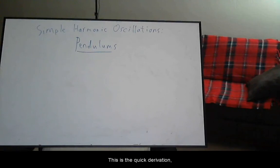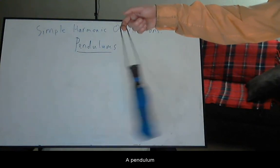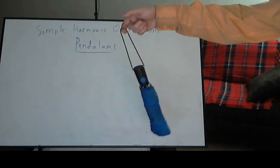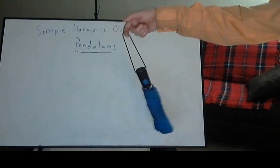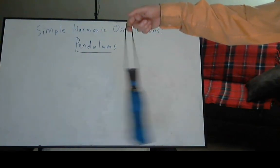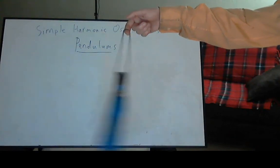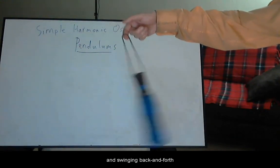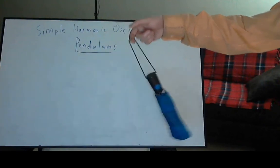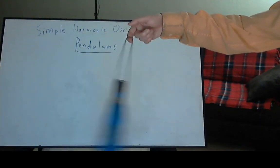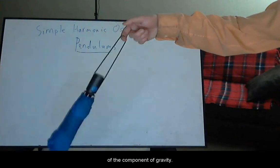This is the quick derivation for simple harmonic oscillations in the pendulum case. A pendulum is a mass suspended in a gravitational environment, displaced from the vertical, and swinging back and forth due to the restoring force of the component of gravity.